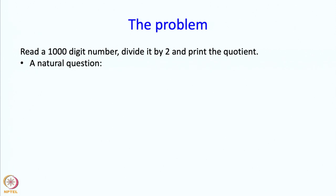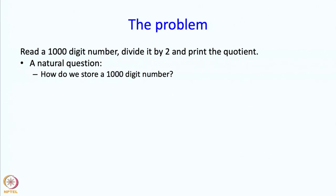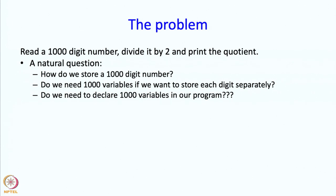Now the moment you talk about a thousand digits, there is a very natural question: how do we store a thousand-digit number? Do we need a thousand variables? Especially if we want to separately store each digit, it seems like there is no getting away from having a thousand variables. And writing int digit1, digit2, digit3, and so on a thousand times sounds completely painful.